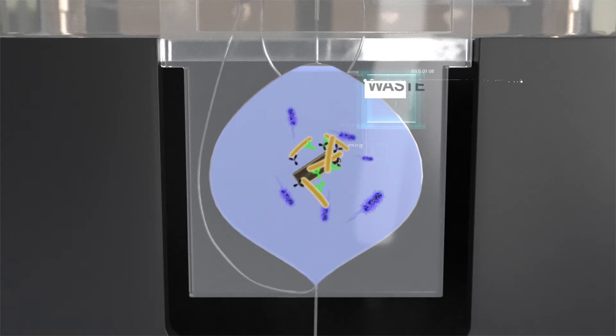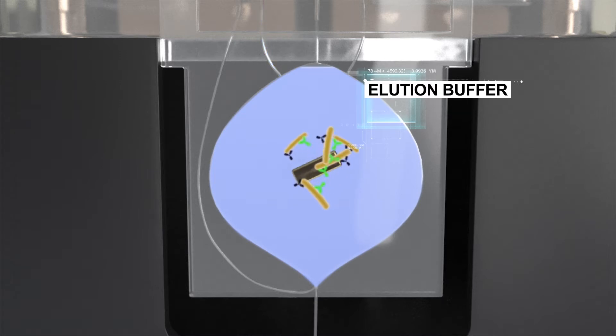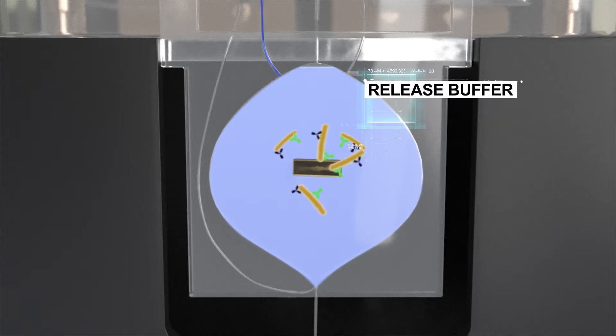Then, the stir bar inside the chamber mixes the sample by means of a magnetic system. Once the sample is mixed, supernatant is extracted through a specific channel but the labelled microorganisms are kept inside the chamber due to the magnetic antibodies coupled to them.